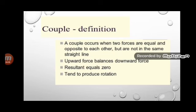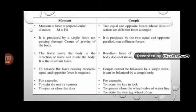The difference between moment and couple: moment is produced by a single force, while couple is produced by two equal and opposite forces. In moment, the resultant force makes the object move in the direction of the force. But in couple, the resultant force is zero because the two forces are equal and opposite.